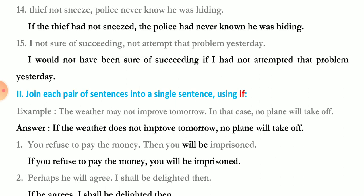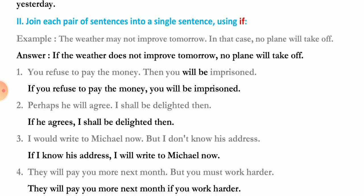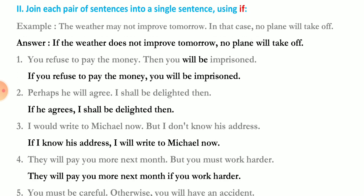Now join each pair of sentences into a single sentence using 'if.' Example: 'The weather may not improve tomorrow; in that case no plane will take off.' 'In that case' means 'if so', so the answer is: 'If the weather does not improve tomorrow, no plane will take off.'